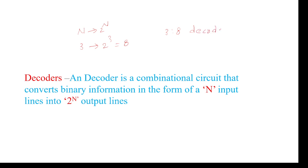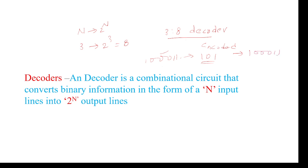The 3-to-8 decoder we need to design — an actual decoder means it converts an encoded form back into its original form. Encoding means one form is converted into another form. For example, an original message like 10011 is encoded to 101, and that encoded message is then converted back into the original form 10011. That is the original meaning of a decoder.